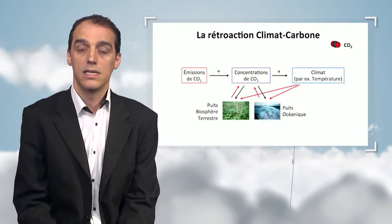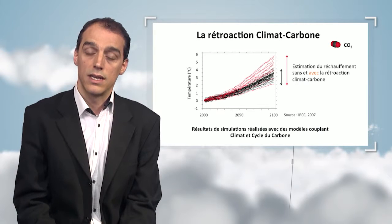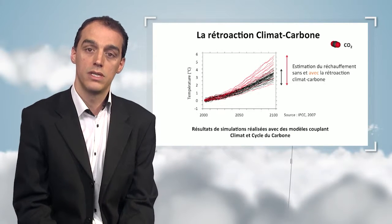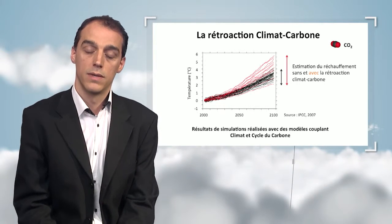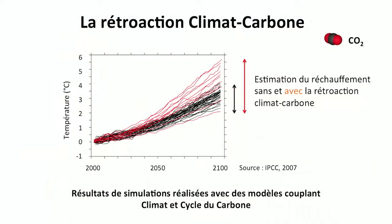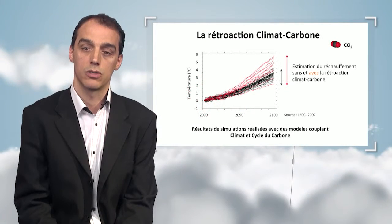By coupling climatic systems and carbon cycles, scientists looked at positive retroactive loops and the way they could induce additional warming by the end of this century. The black curves show a temperature increase simulation with no retroaction between climate and carbon cycle. In red, we have temperature increase with a positive retroactive loop, and with that loop, the temperature by the end of the century could be 1.5 degrees greater than if there had been no positive retroactive loop.